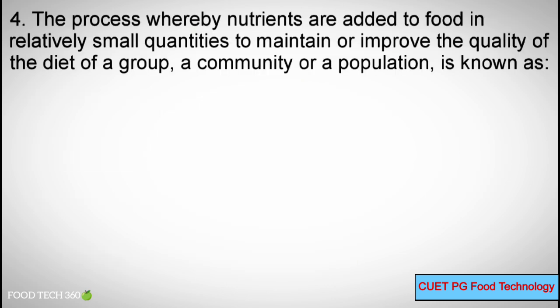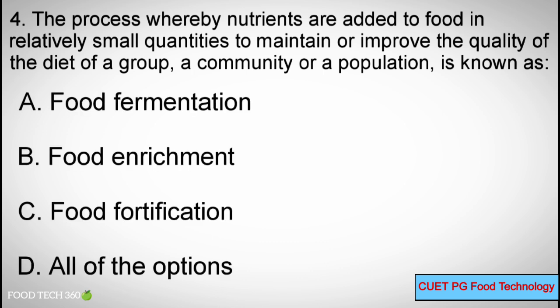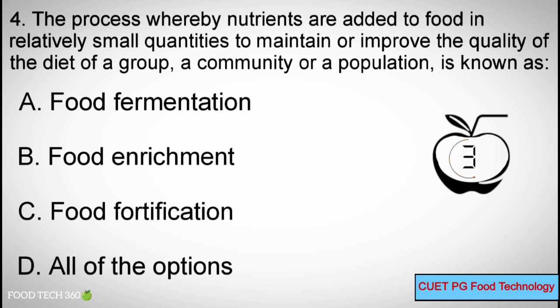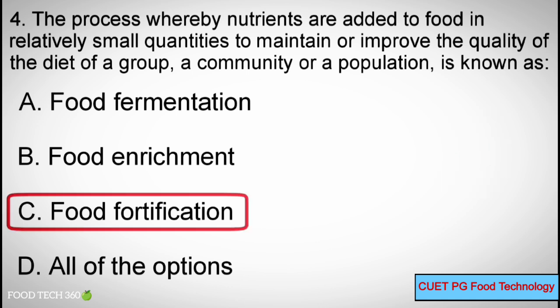Question number 4. The process whereby nutrients are added to food in relatively small quantities to maintain or improve the quality of diet of a group, a community or a population is known as: Options: A. Food Fermentation, B. Food Enrichment, C. Food Fortification, D. All of the options. Correct answer: C. Food Fortification.